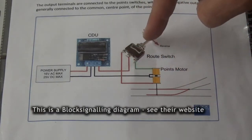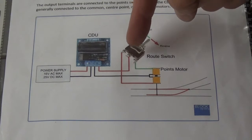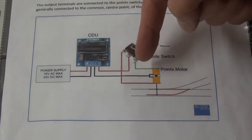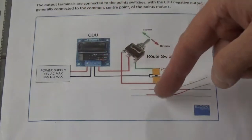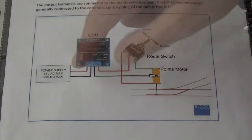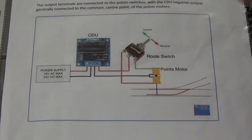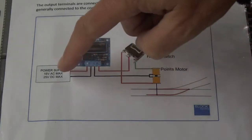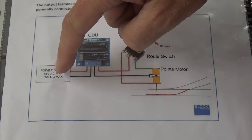The switch has a neutral central position and then left and right for the point, so the point can operate left and right. It needs a 16 volt AC input from the controller, or for example 25 volt DC maximum input.